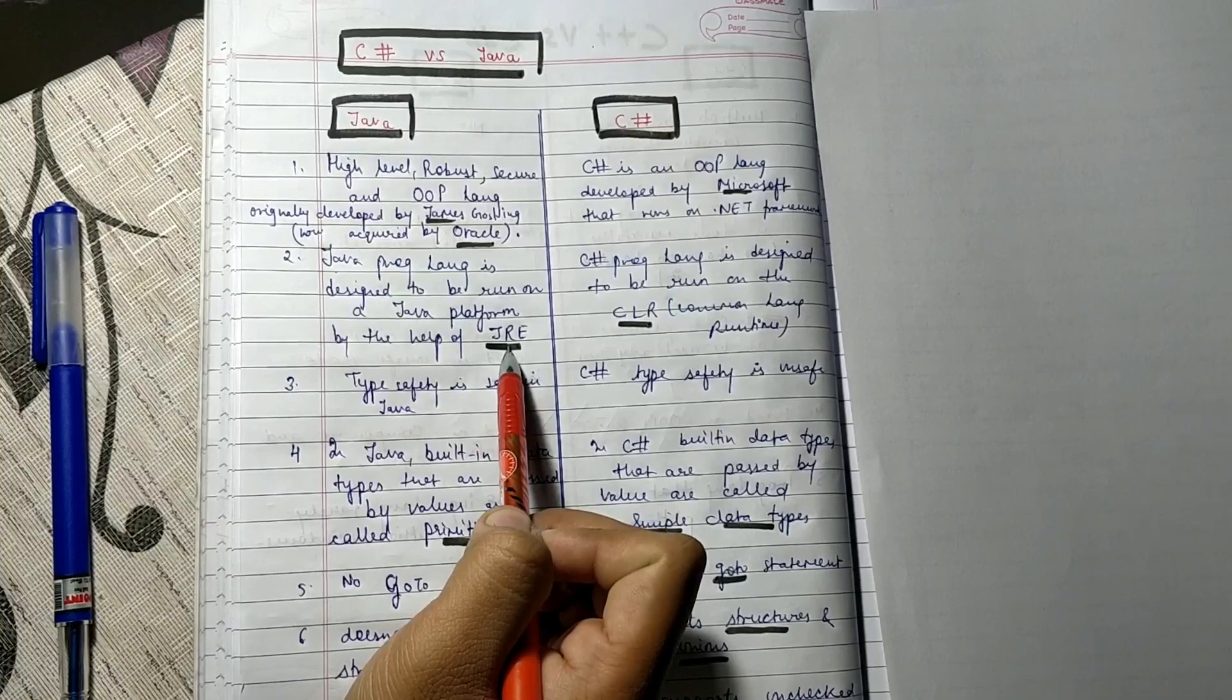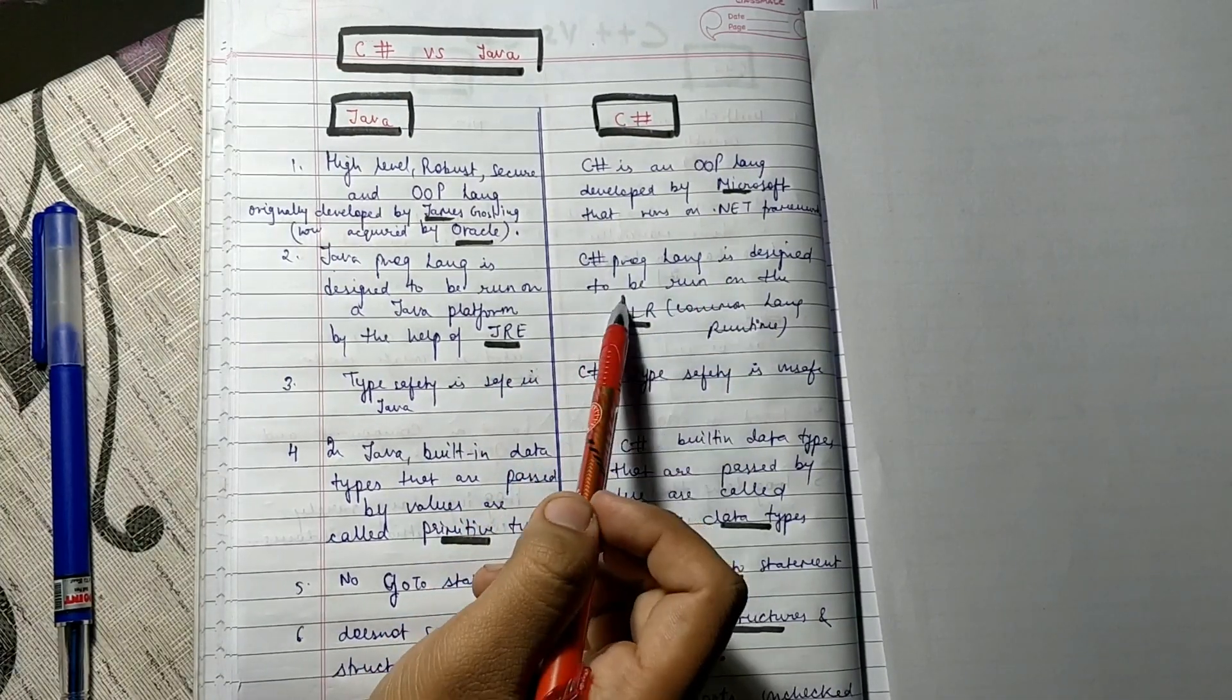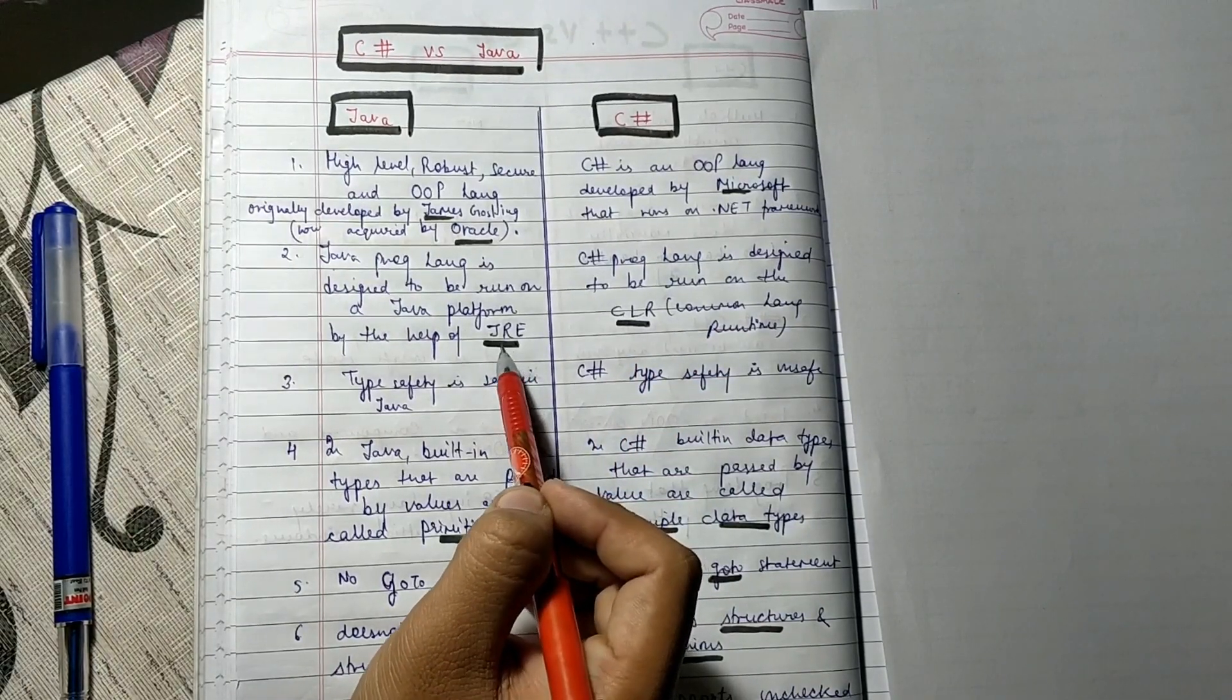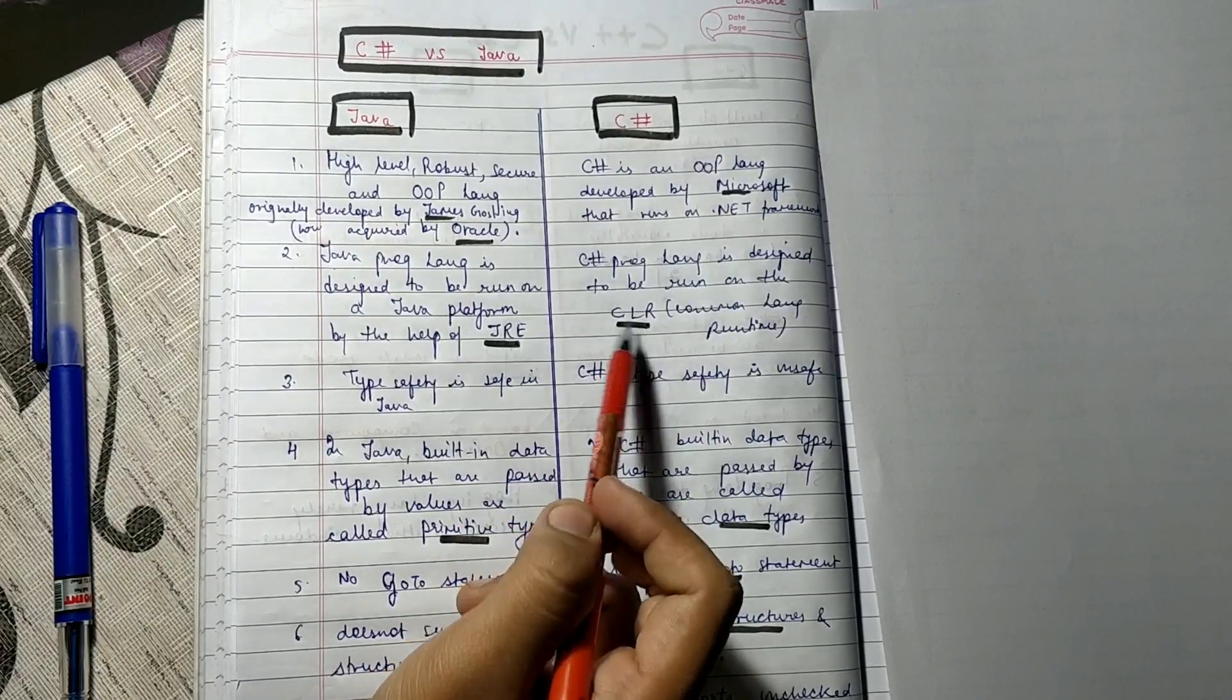With the help of Java programming language is designed to run on Java platform, and C# programming language is designed to run on the CLR, that is Common Language Runtime. JRE is Java Runtime Environment. So CLR and JRE are required.